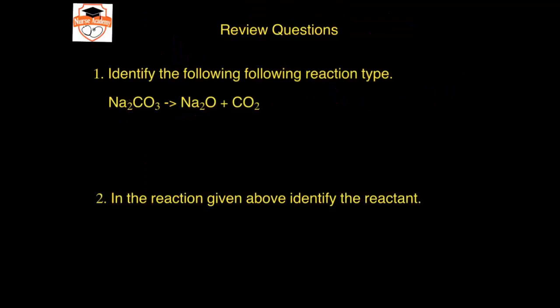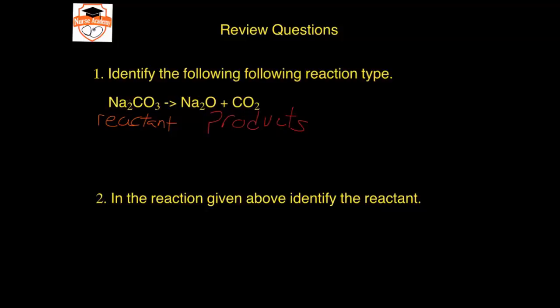Here are the review questions for this topic. Please pause your video and answer the questions, and I will return in 10 seconds to discuss the answers. For this chemical reaction, we have a single reactant and multiple products — that is a decomposition reaction, because sodium carbonate is decomposing to form sodium oxide and carbon dioxide. The compounds on the left side of the reaction arrow are reactants and those on the right are products. The reactant of this chemical equation is Na₂CO₃, or sodium carbonate.